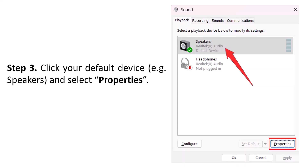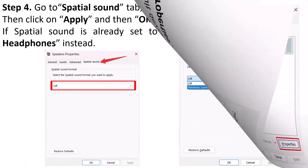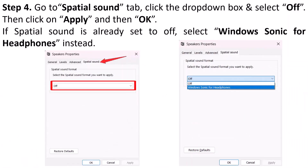Select Properties. Now go to the Spatial Sound tab, click the drop-down box and select Off, then click Apply and then OK. If Spatial Sound is already set to Off, then select Windows Sonic for Headphones instead.